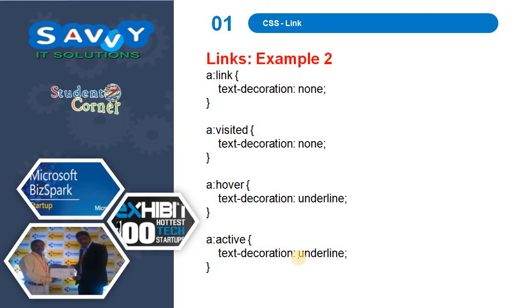The second example is text decoration. We are also changing the text decoration of the links — meaning text-decoration is set to none or underline. Underline means it adds an underscore; otherwise it ignores the underscore and prints in normal text.